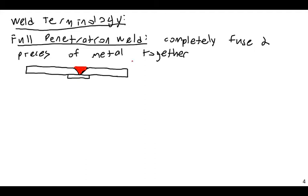With bolts, you're not literally bonding materials together — you just have one thing connected snugly to another. When you weld, you are taking two pieces of metal and turning them into one. You are fusing them together at the molecular level. That is what welding fundamentally is. With a full pen weld, the weld material goes all the way through from top to bottom of the plate.